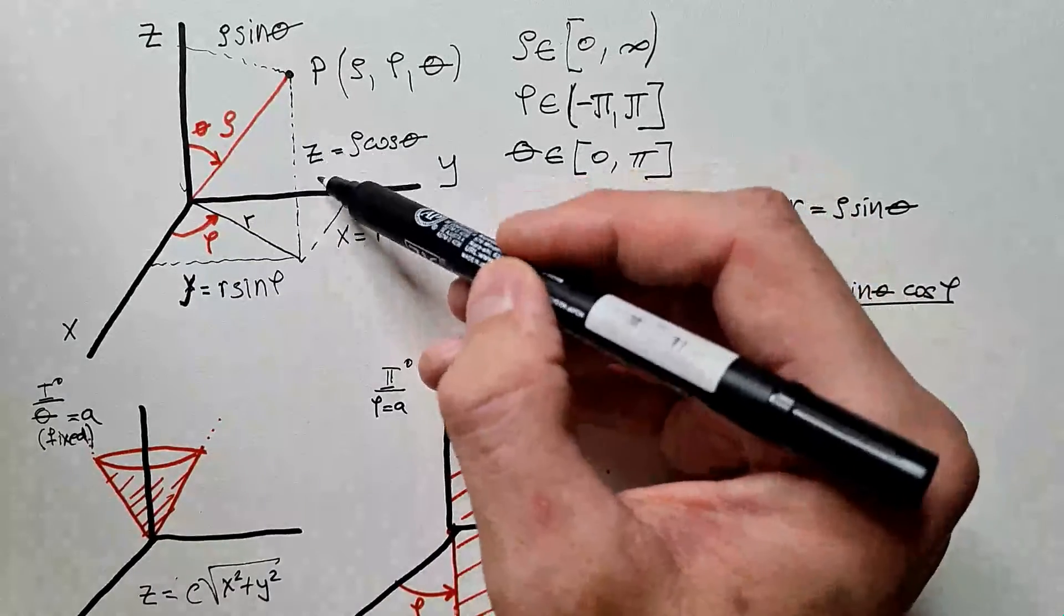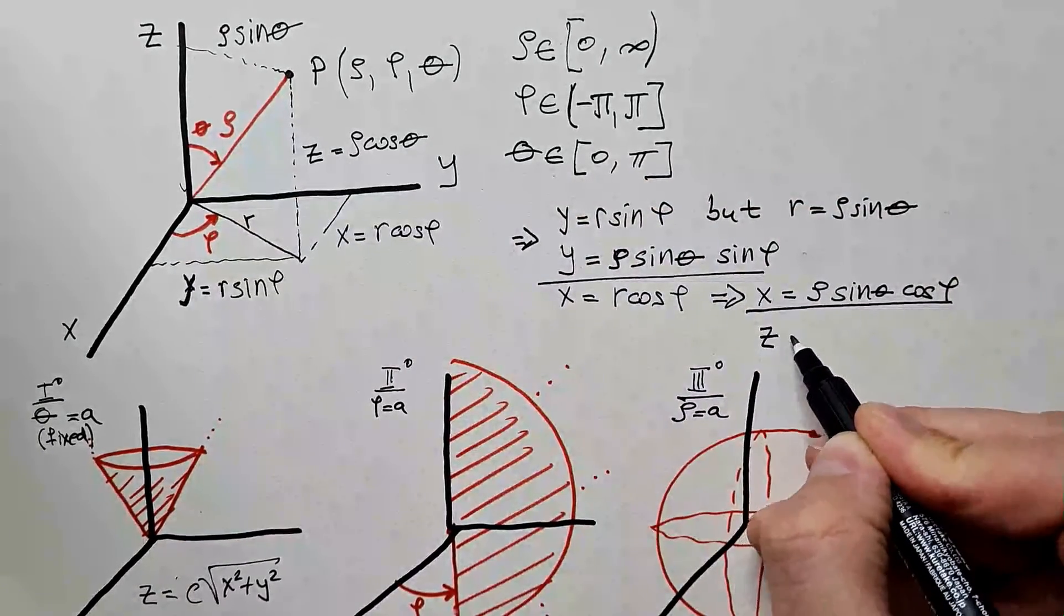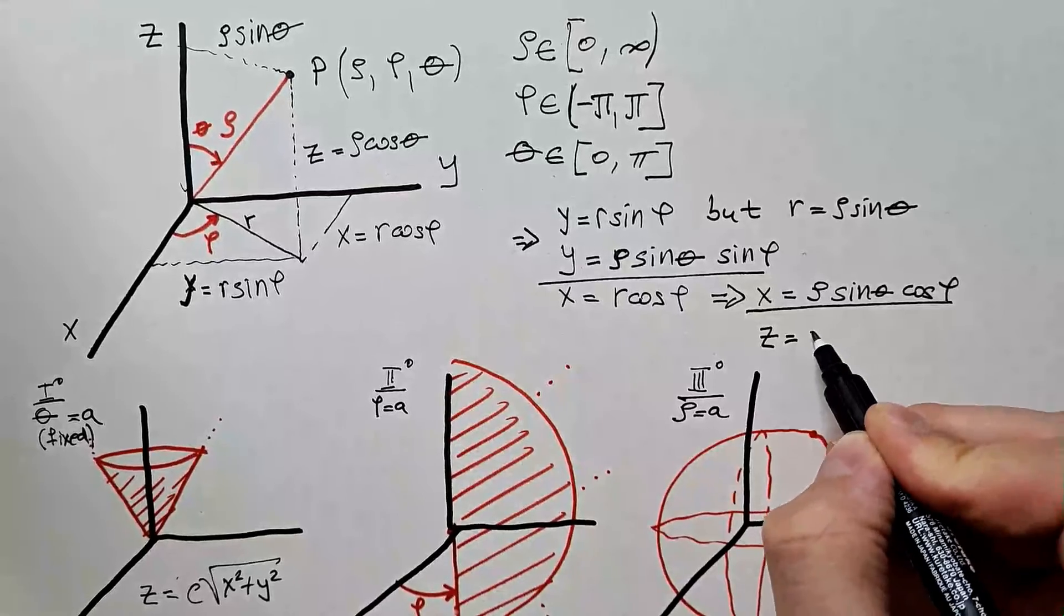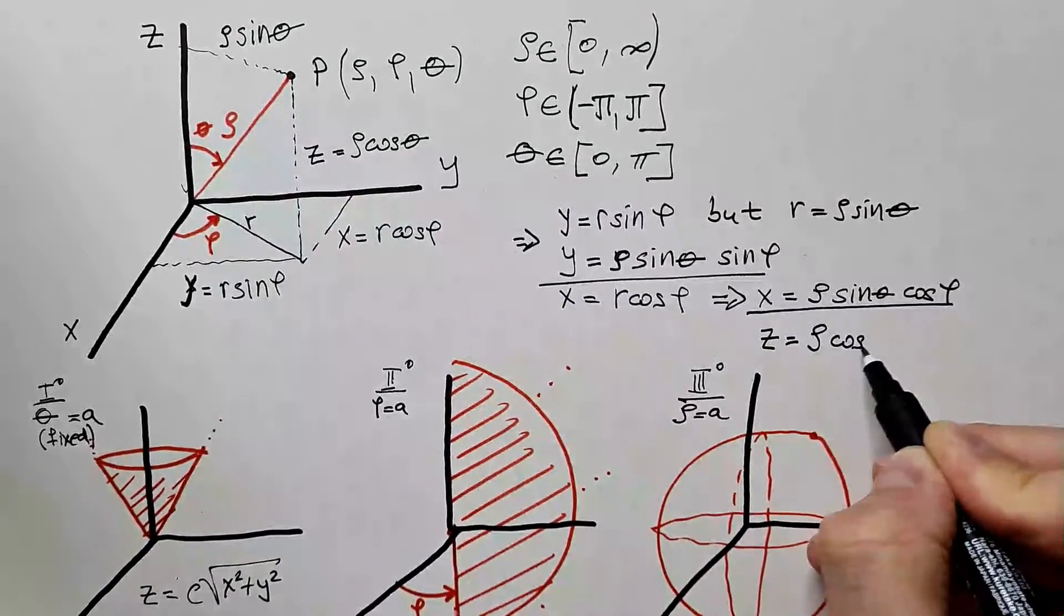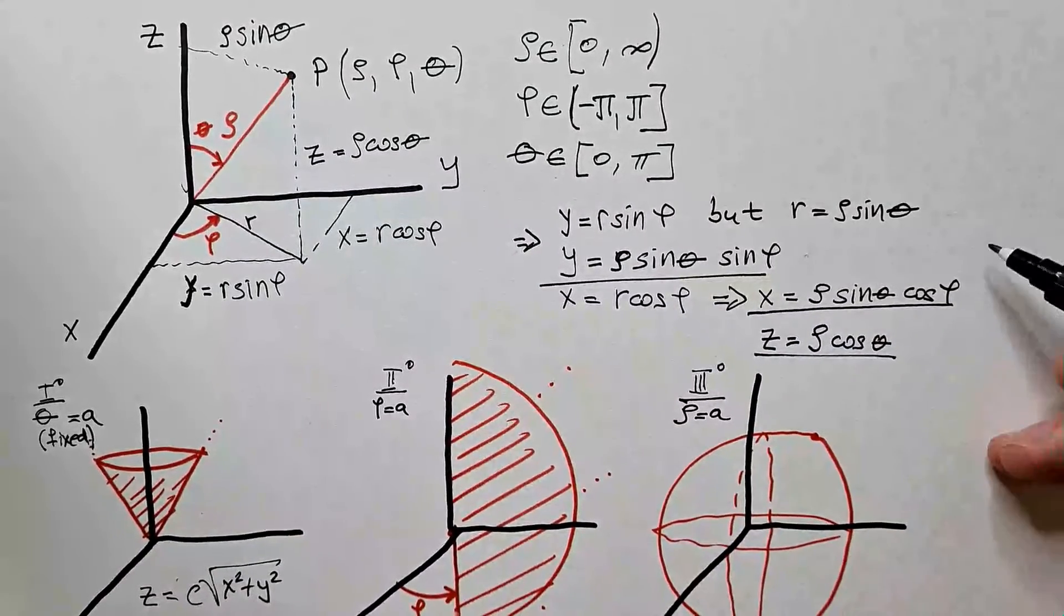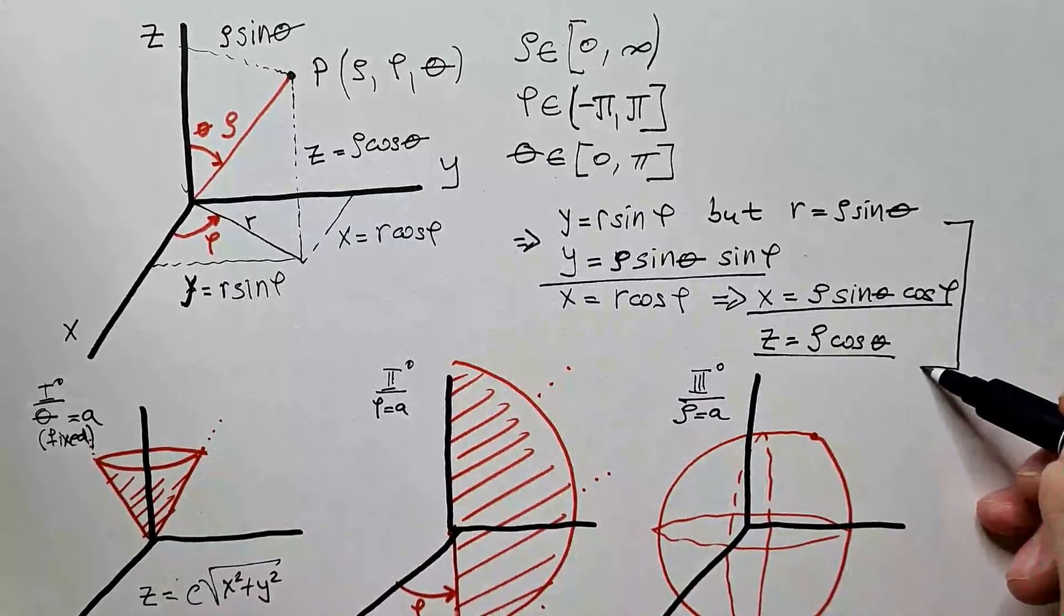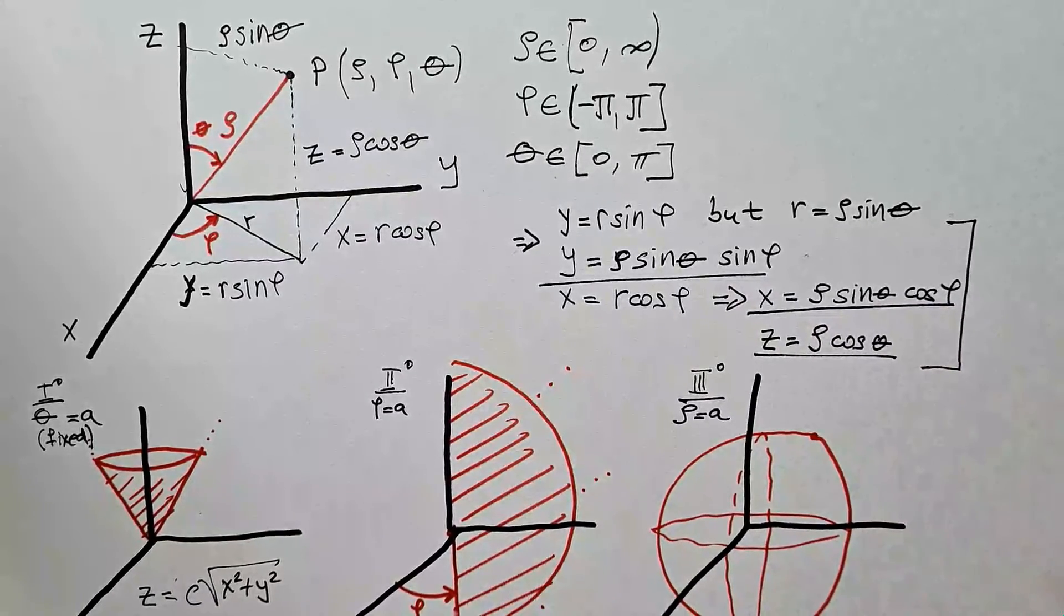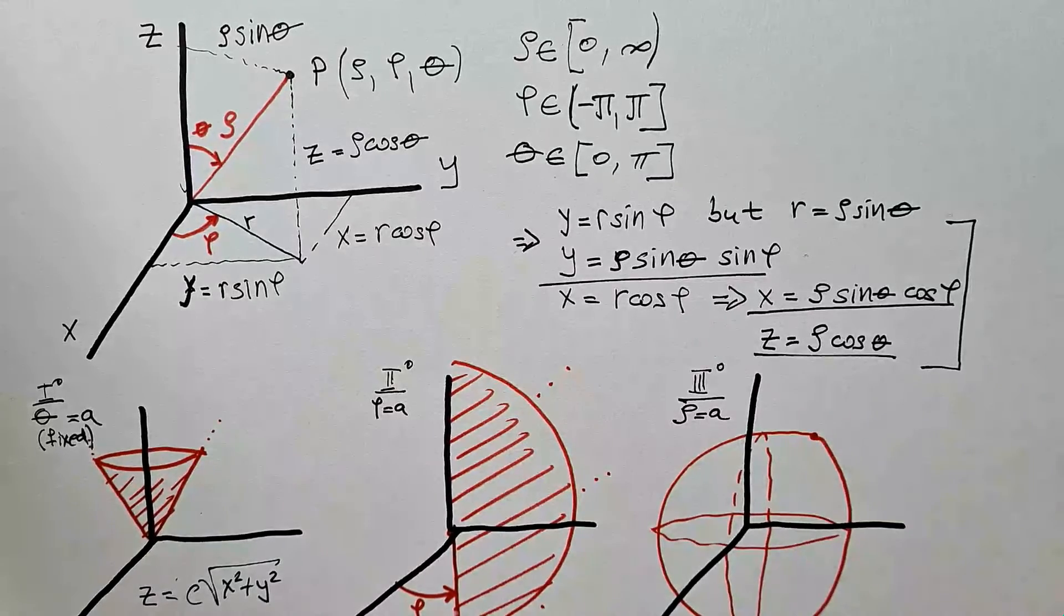Lastly, from this figure, we already observed that z is rho cosine theta. And these three underlined equations give me transformation from spherical to Cartesian coordinates.